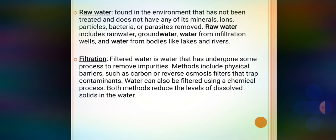Filtered water is water that has undergone a process to remove impurities. Methods include physical barriers such as carbon filters or reverse osmosis filters that trap contaminants; water can also be filtered using a chemical process. Both methods reduce the level of dissolved solids. Nowadays ultrafiltration, reverse osmosis, and microfiltration processes are all used.